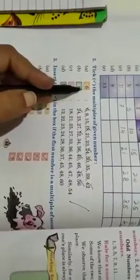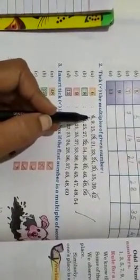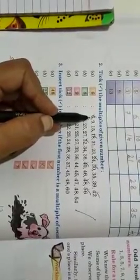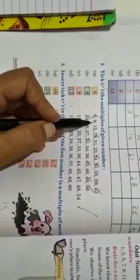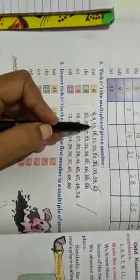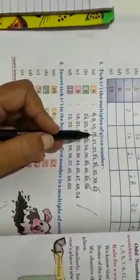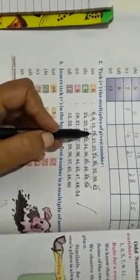We have to find multiples of 6. 6 is multiple of 6, so we tick this number. 9 is not multiple of 6, 15 is not multiple of 6, 18 is multiple of 6, so tick this number.